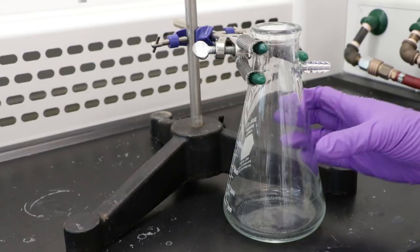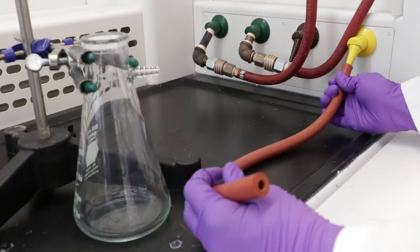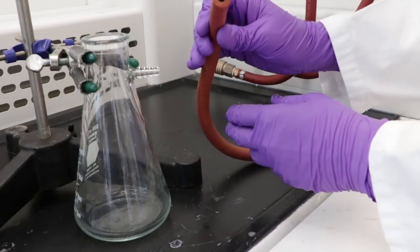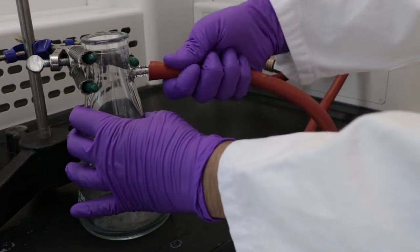Make sure the flask is attached securely. Attach the orange tubing to the yellow vacuum tap. Then attach it to the vacuum flask. Twist to make sure it's on tightly.